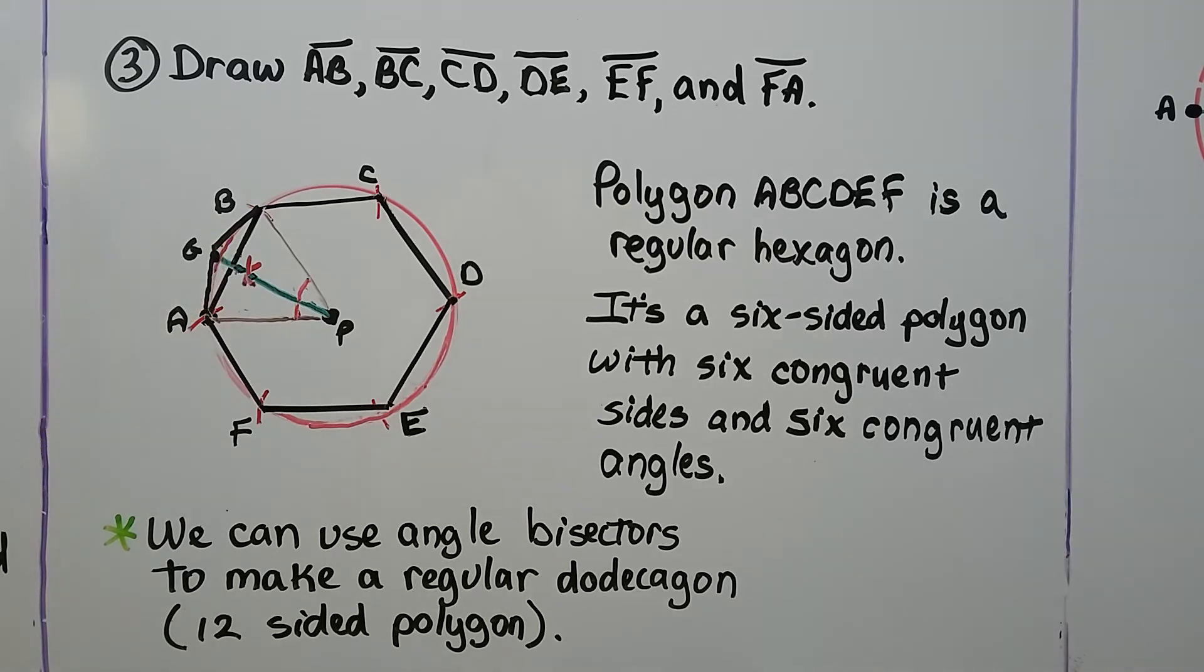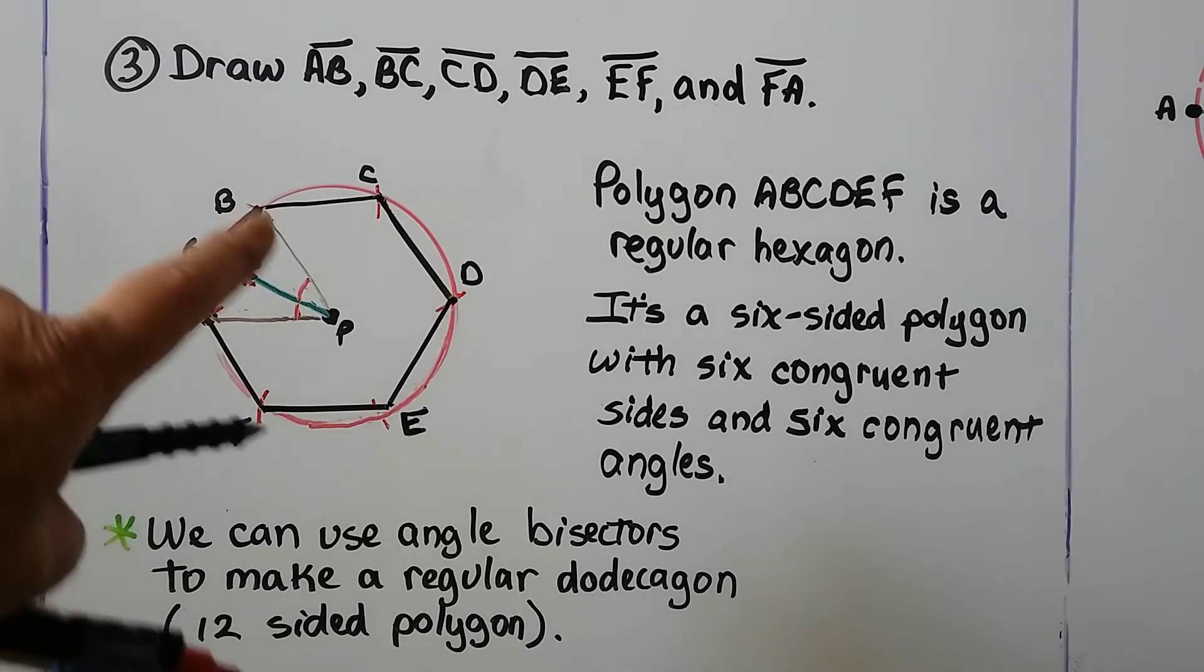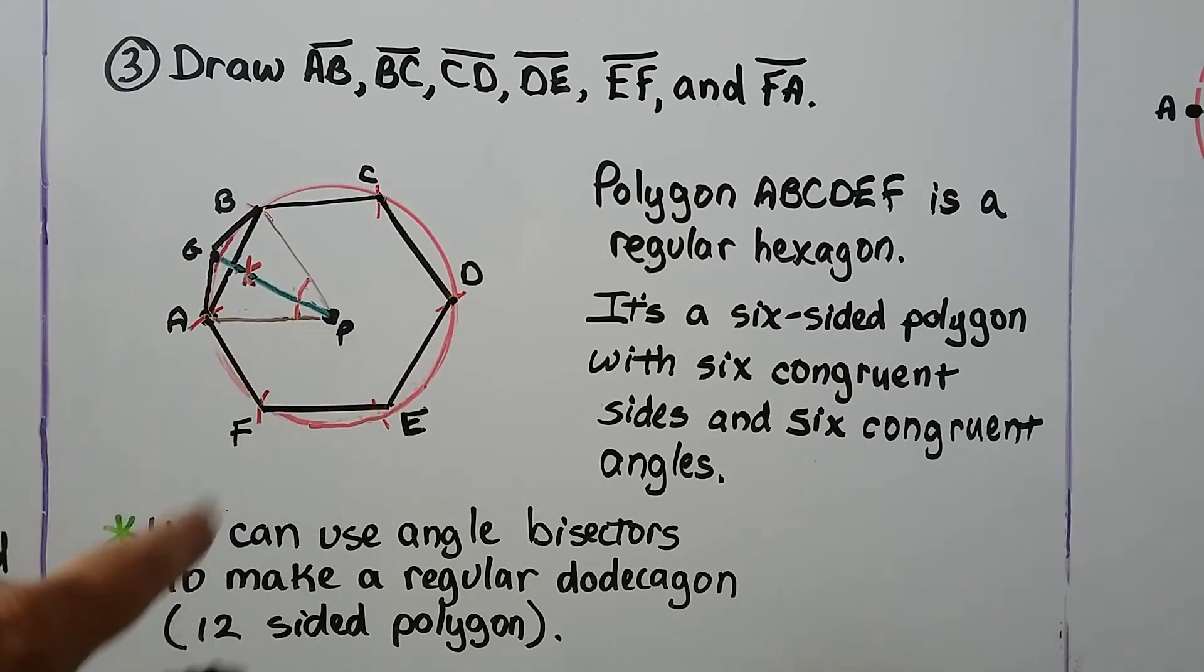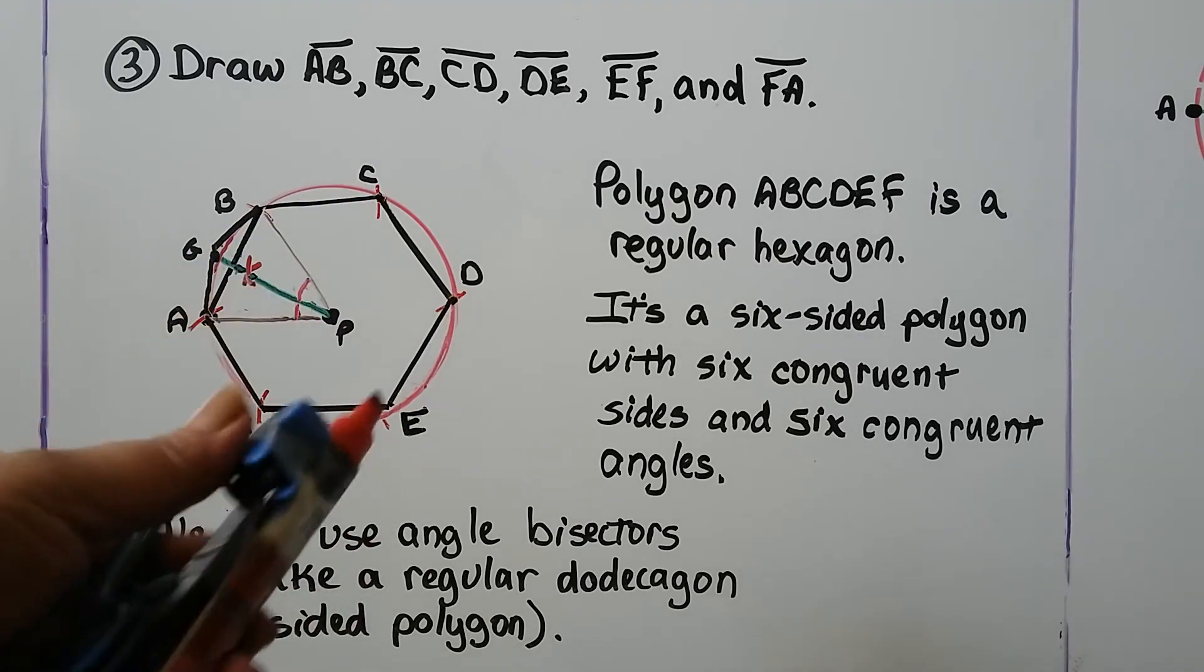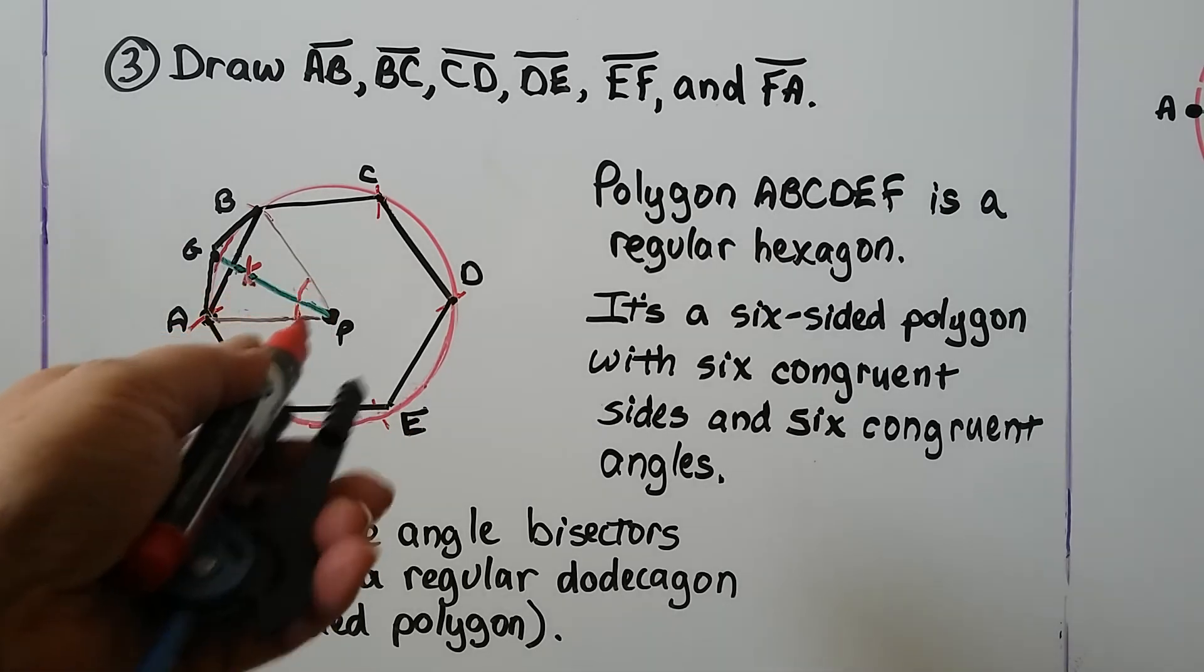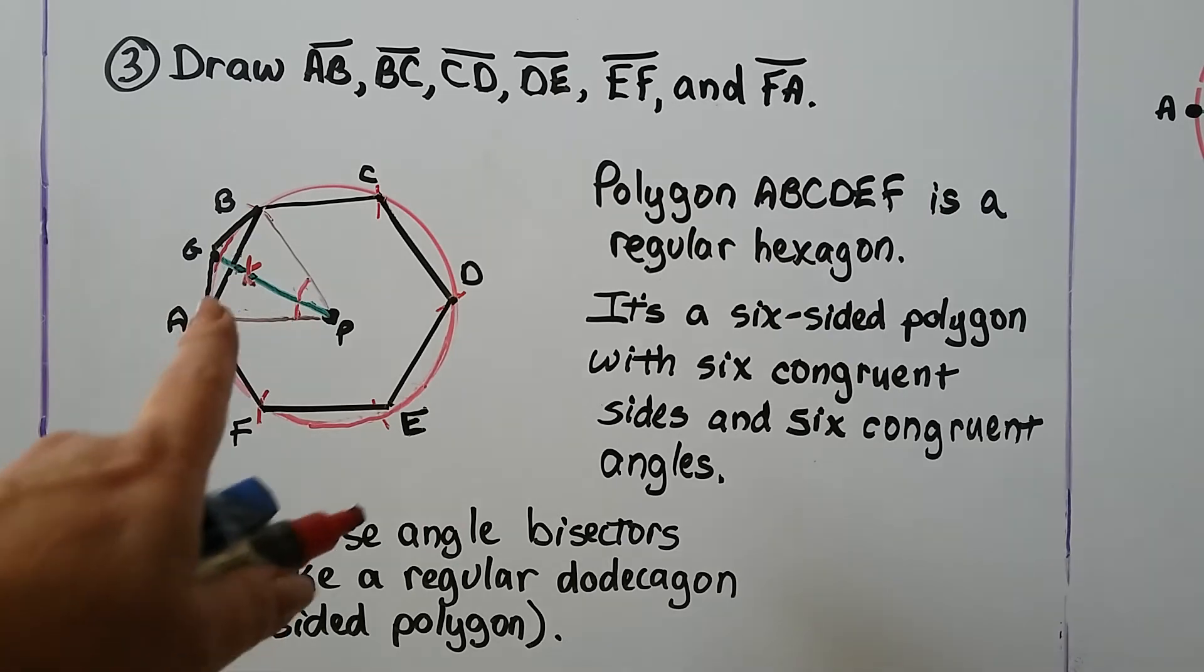Ignore this part right here for a second. It's a six-sided polygon with six congruent sides and six congruent angles. As shown here, we can use angle bisectors to make a regular dodecagon—that's a 12-sided polygon. So we're going to use the drawing of our hexagon to make a dodecagon. What we do is make segments from P to B and P to A, and we do it to each of these vertices.